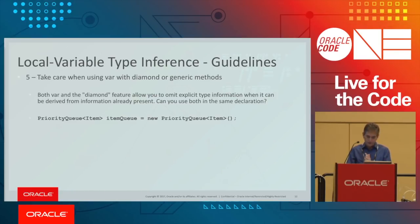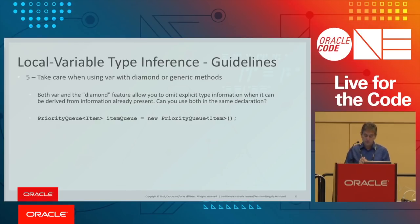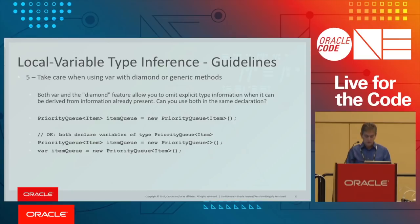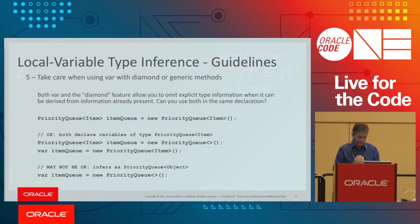Another case requiring care is using var with diamond or generic methods. Both var and diamond allow you to omit explicit type information where it can be derived. You can use both together, but it's not recommended. Using diamond alone is fine, and using var alone is fine — it's clear what the type will be. But using var with diamond together is a problem: the inferred type becomes PriorityQueue of Object, not PriorityQueue of Item as originally intended. So this combination is not recommended.